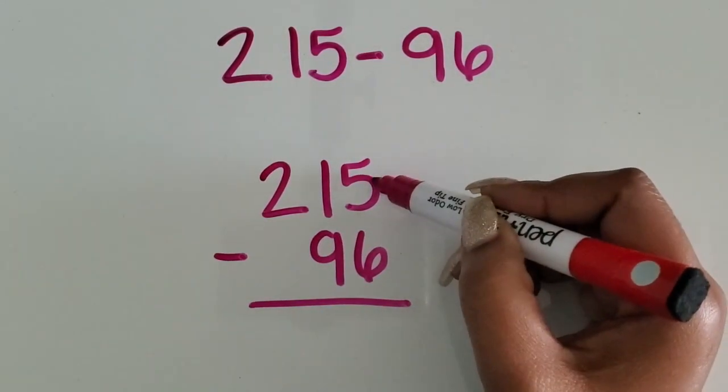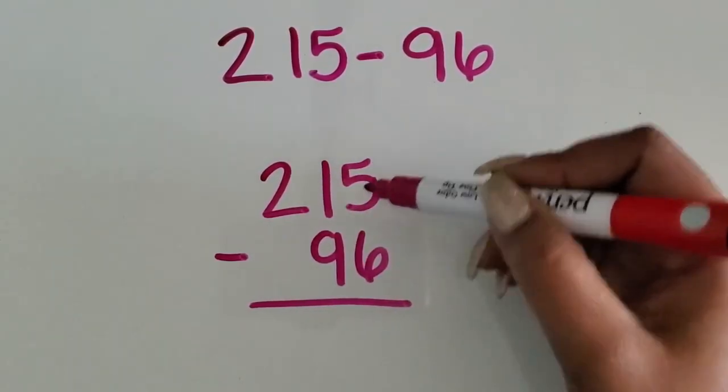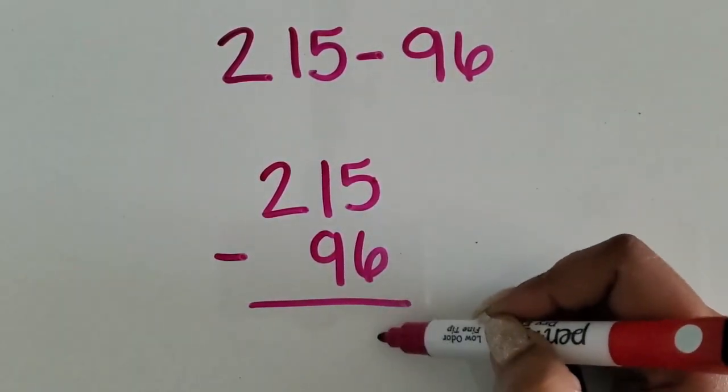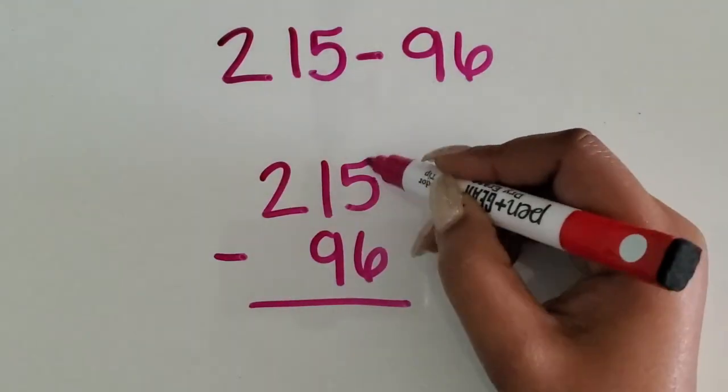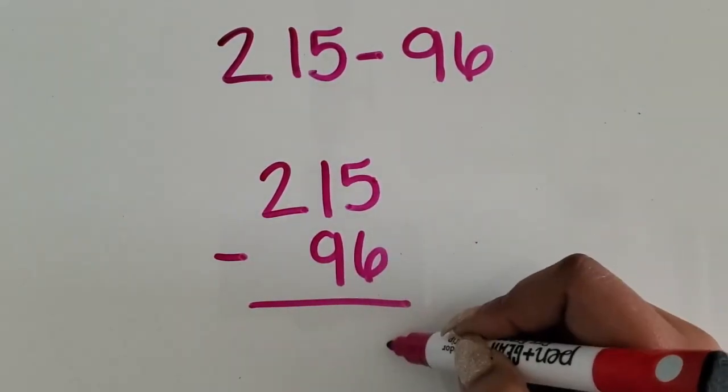We're going to start in the ones place. I have five ones at the top in 215. I have six ones at the bottom in 96. I want my answer to be a positive number, so I don't have enough ones here in order to subtract six ones and get a positive number.